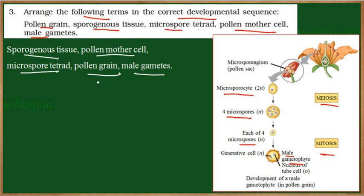Pollen grains will undergo mitotic division giving rise to the male gametes. Inside the pollen grain there are two types of cells: the vegetative cell and the generative cell. The vegetative cell gives rise to the pollen tube and the generative cell gives rise to the male gametes. So the correct sequence is: sporogenous tissue → pollen mother cell → microspore tetrad → pollen grain → male gametes.